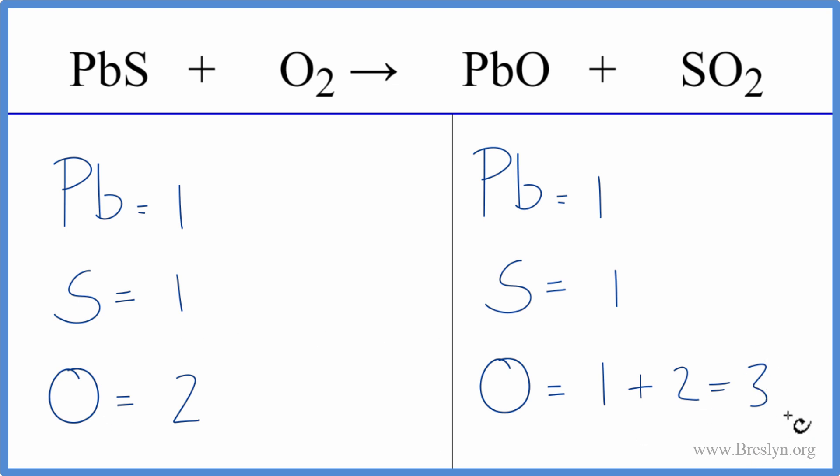Whenever I have an odd number of oxygen atoms, I like to get that to an even number. That makes it easy to come over here and just put an even number here and get the oxygens balanced. So I'm gonna put a two in front of the lead oxide, and that will get this to be an even number.